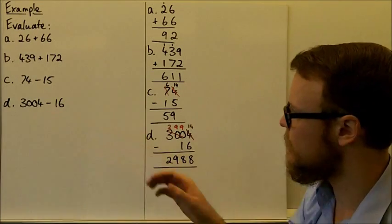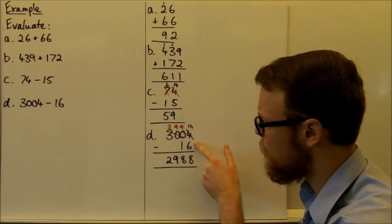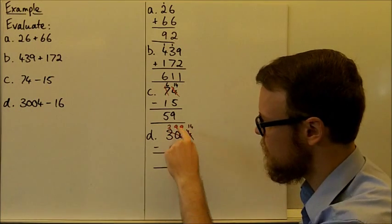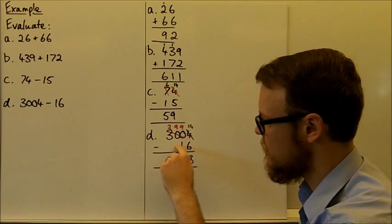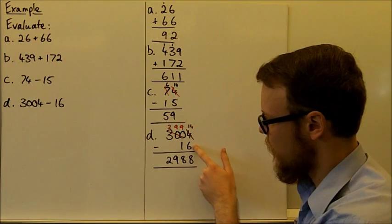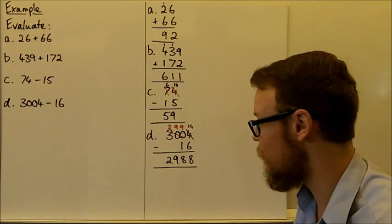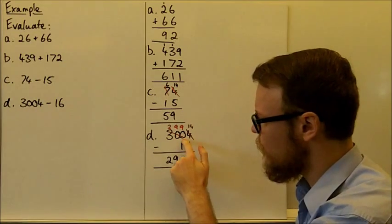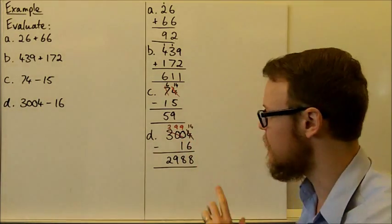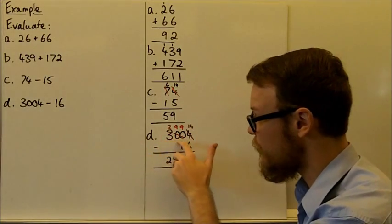Now here's a little bit of a tricky one, this 3004 minus 16. Now I need to do the same thing again, because once I've rearranged these and I've lined them up so the ones are in the ones column, tens in the tens column, this 16 doesn't have any in the hundreds or thousands. That's okay. I cannot subtract 6 away from 4. It will become less than 0. So I need to borrow. But it looks like I don't have any values to borrow from, when in reality I do have some tens to borrow from to rearrange. I've got 300 of them.